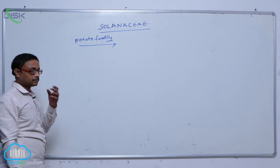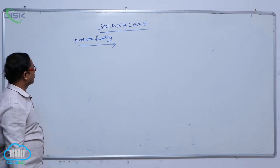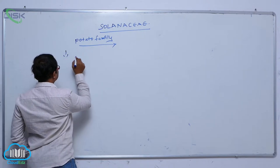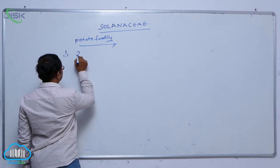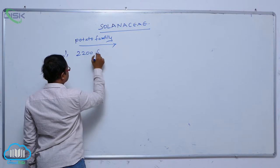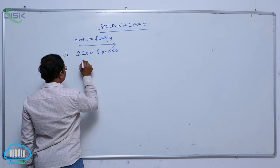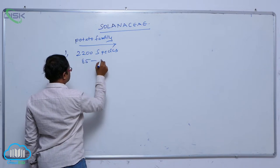So in that potato family, generally we have 2,200 species and 85 genera.